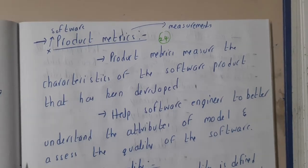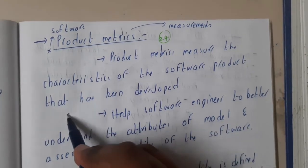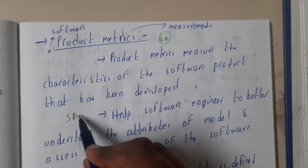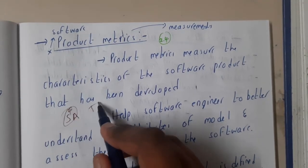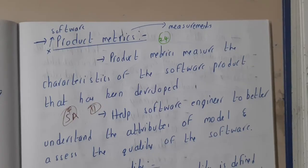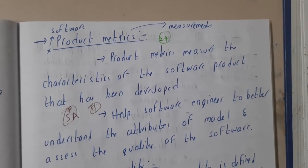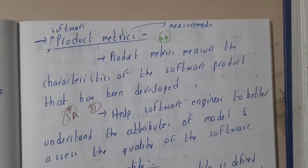So now we have completely covered testing. Initially we discussed software quality assessment, that is SQA, after that we went into testing, and now we will be moving on to product metrics, where we will discuss different metrics used to represent multiple things. Let us meet in the next lecture — thank you for watching.